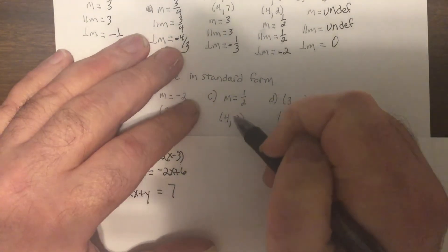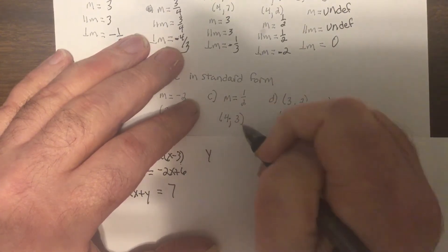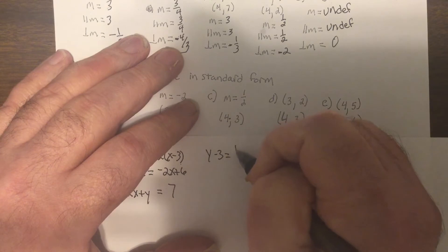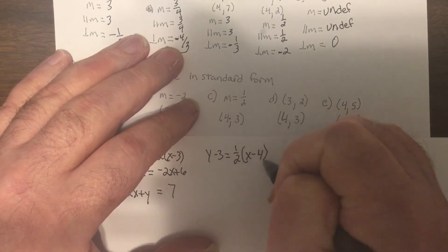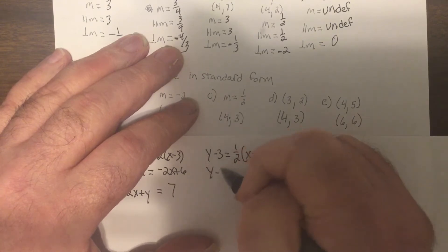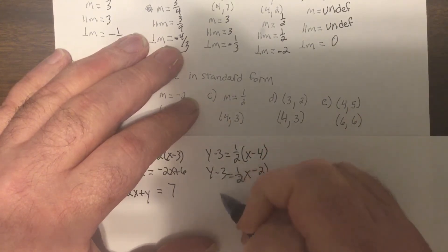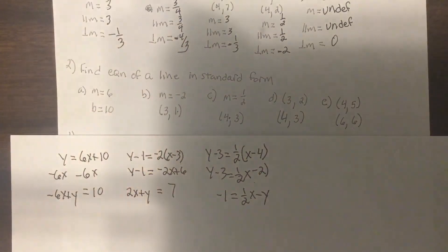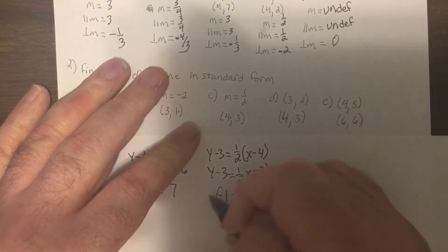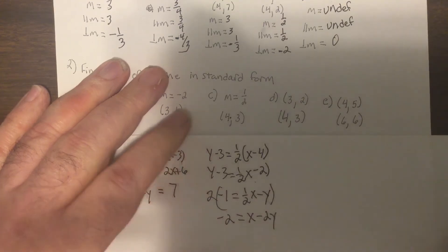So this one, I have a point, I have a slope. So it'd be y minus 3 equals 1 half times x minus 2. So I'm going to subtract y to get x and y on one side and add 2. So it'd be negative 1 equals 1 half x minus y. But wait a minute, Mr. Murphy, I thought you said standard form couldn't have fractions. Oh, you are so right. I'm so glad you caught that. So I'm going to multiply both sides by 2. So I have negative 2 equals x minus 2y. Yes.